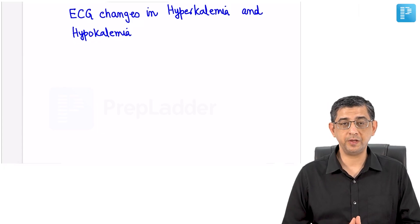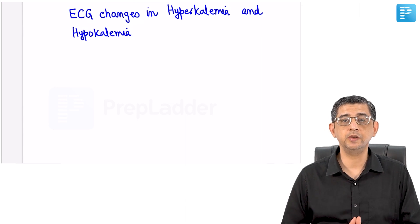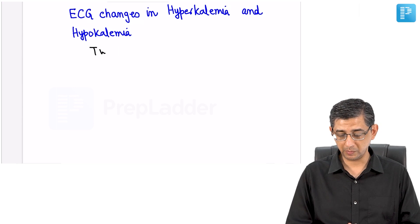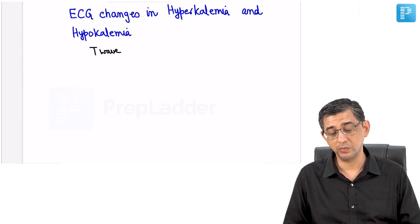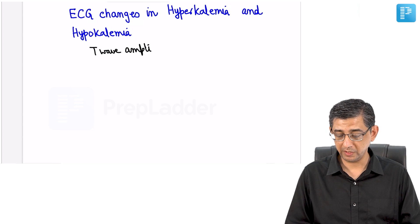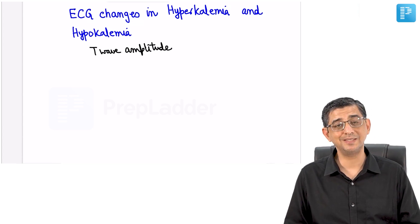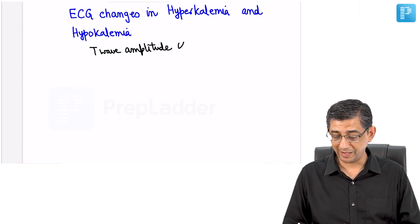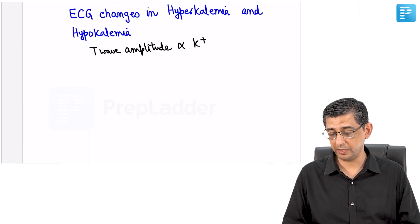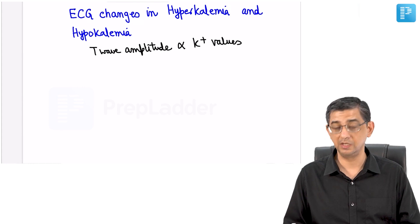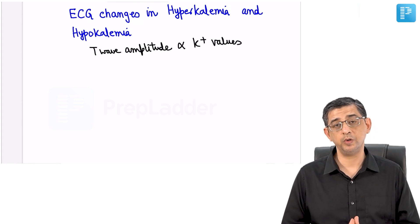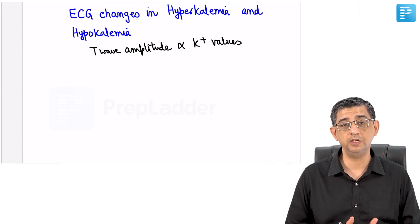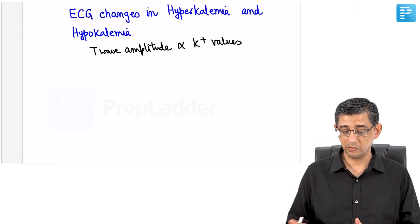Welcome back. The next topic we're studying is ECG changes in hyperkalemia and hypokalemia. The basic concept to remember is related to T wave amplitude. The height of the T wave in limb leads is less than 5 millimeters; in chest leads it's less than 10 millimeters. This amplitude is directly related to potassium values, so whenever potassium rises, the T wave height will also rise, and when potassium falls, the T wave amplitude will fall.